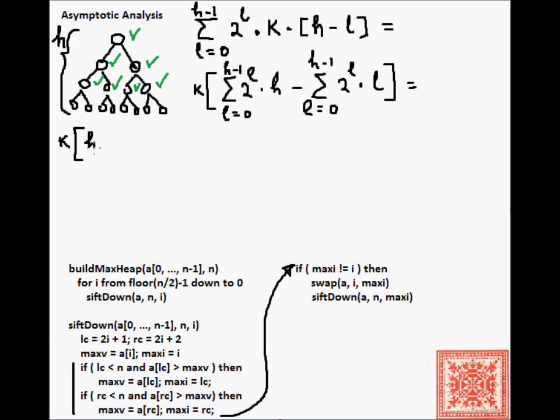Let's continue with this. The first sum simplifies to h times 2 to the h-1, plus 1, minus 1, over 2 minus 1. So, it's h times 2 to the h-1. And, the second sum simplifies to h minus 2, times 2 to the h, plus 2.